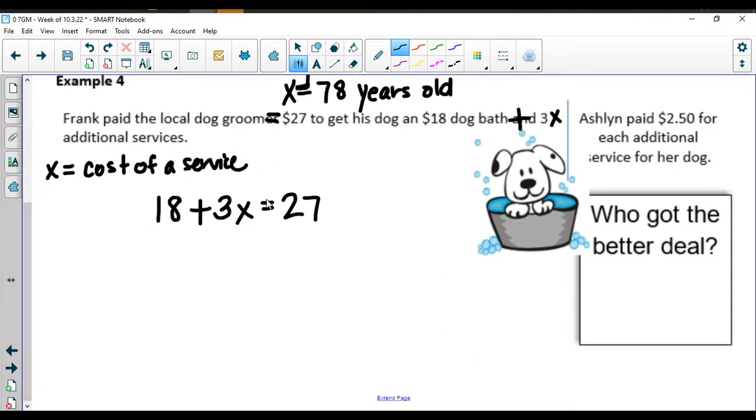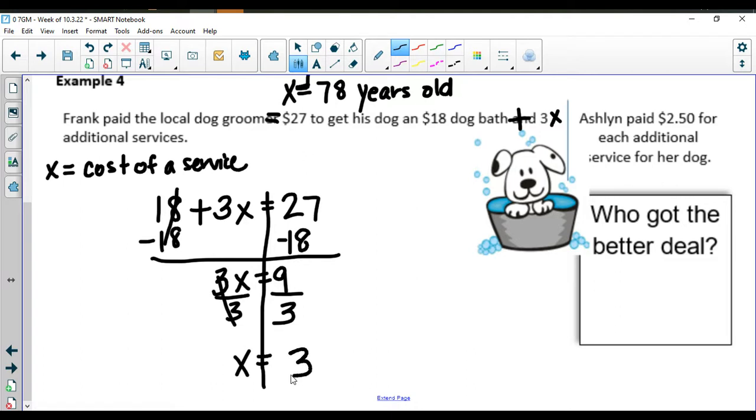Take a second and solve this equation to tell me X equals how much are the extra services for Frank's puppy. First thing you would do is subtract that 18 off the front. In doing that you have a positive 3X equals nine. We're going to divide by three and that would give me that X is equal to three. This is a cost so we're going to put a dollar sign with it per service.